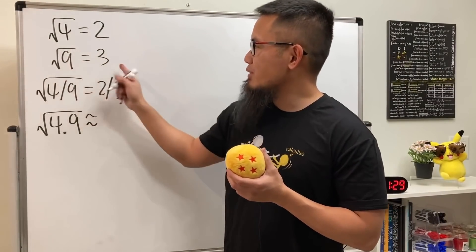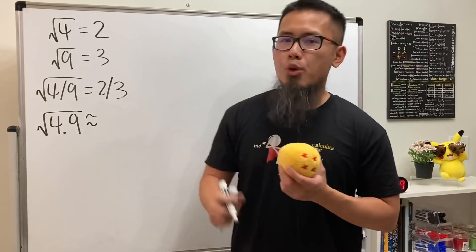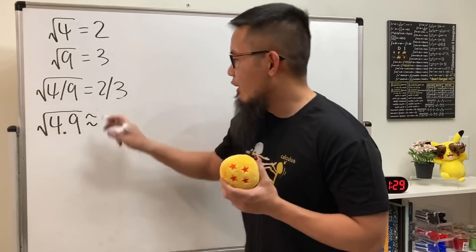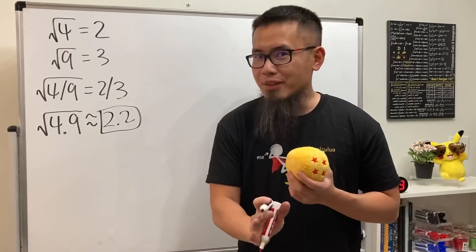Okay, so √4 = 2, √9 = 3, √(4/9) = 2/3. Now what's the value for √4.9, approximately speaking? 5 seconds: 5, 4, 3, 2, 1. Of course, this is approximately 2.2. And we are not going to be using a calculator; we'll be using calculus.